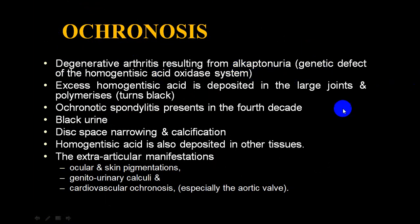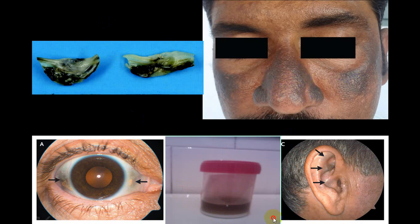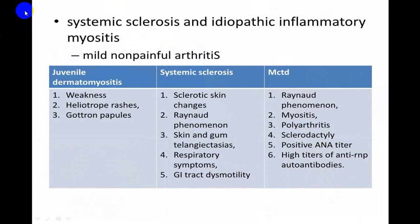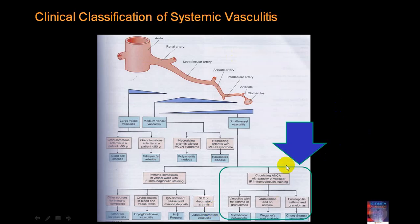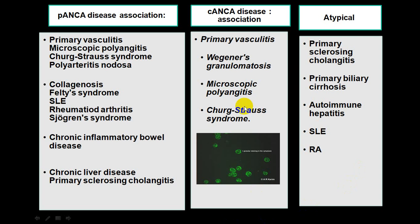Ochronosis is a rare genetic degenerative arthritis resulting from alkaptonuria. Clinical manifestations include pigmentation, black-colored urine, scleral deposits, and skin pigmentation. Dermatomyositis, mixed connective tissue disorder, systemic sclerosis, and vasculitis producing various types of joint involvement are additional conditions not covered in detail.